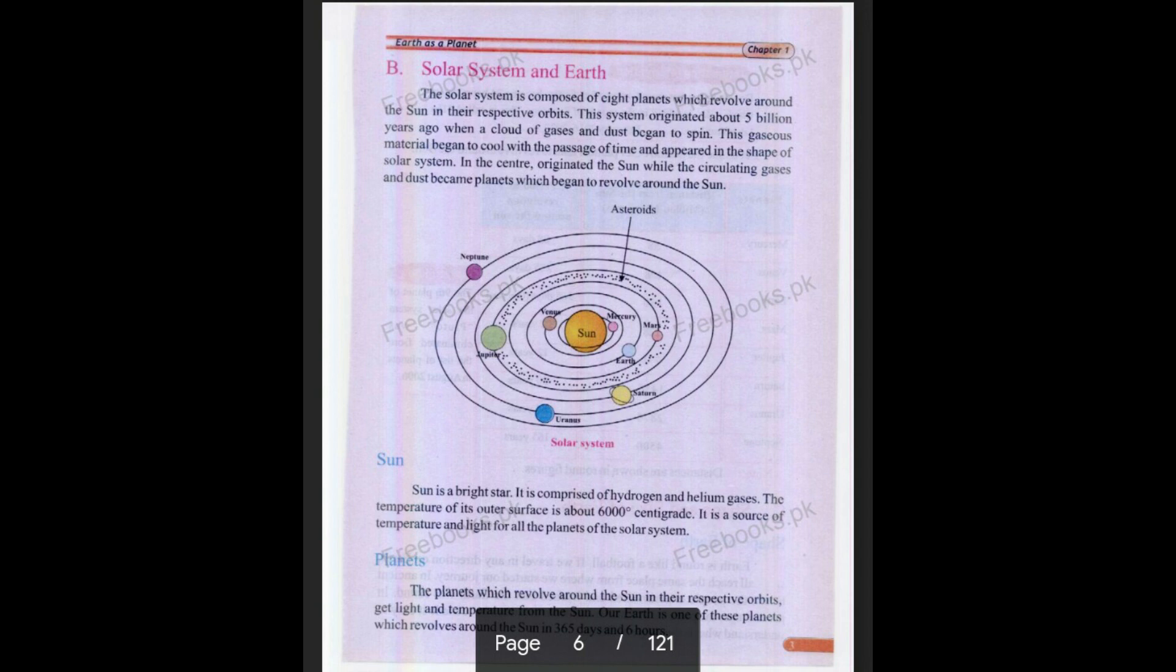Scientists believe that our third planet, which is our house, the Earth, also originated about five billion years ago. Scientists say that the cloud of gases and dust began to spin. As this gas and material began to cool down, these appeared in different shapes, like that appeared in the shape of solar system, in the shape of different galaxies. In the center originated the Sun, and while the circulating gases and dust cooled down, with the passage of time they took the shape of planets which began to revolve around the Sun.